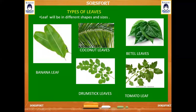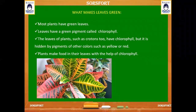The banana leaf is the biggest leaf — broad and lengthy in size. Coconut leaves are long and thin. There are also different types of leaves with different shapes, like beetle leaves, drumstick leaves, and tomato leaves. Now, why are leaves important to the plant? Let's see.